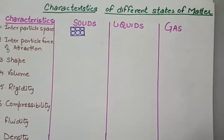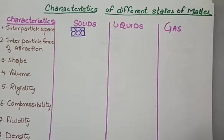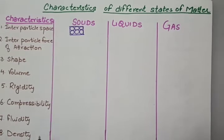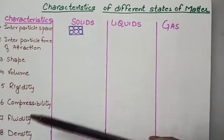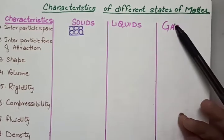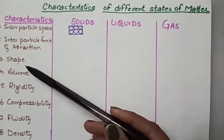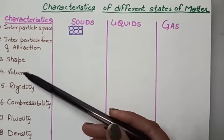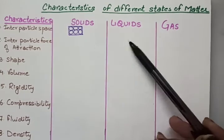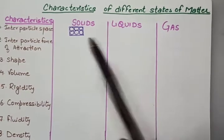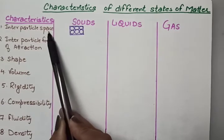Now we will start with the characteristics of different states of matter. Side by side, on the basis of these points, we can differentiate solid, liquid, and gas. We have studied the important terms and their meanings. So now it is easy for us to differentiate solid, liquid, and gas. The first point is inter-particle space.